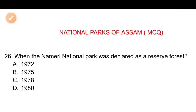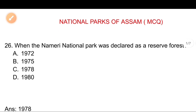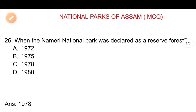Question number 26: When was Nameri National Park declared as a Reserve Forest? The options are 1972, 1975, 1978, or 1980. The correct answer is 1978. So Nameri National Park was declared as a Reserve Forest in 1978.